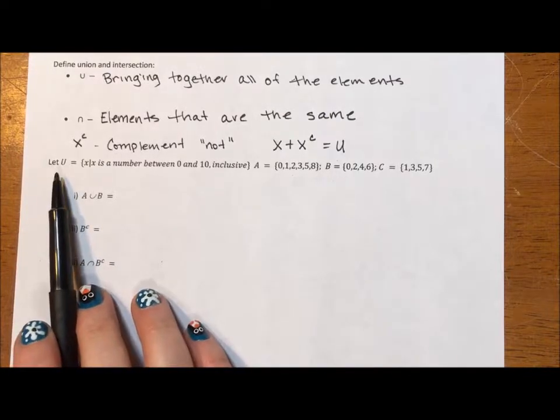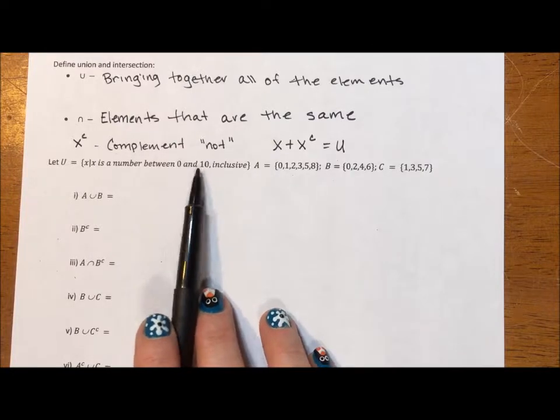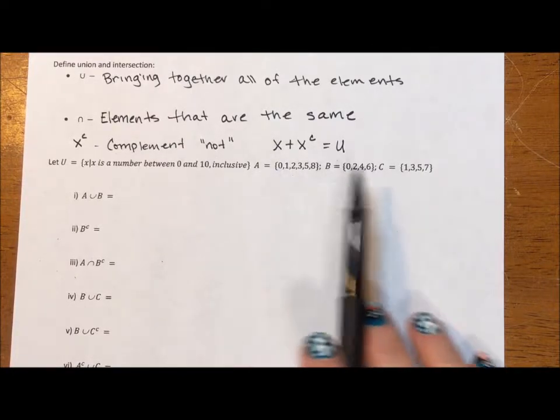Here I have a universe defined. U: X is a number between 0 and 10 inclusive. That means 0 and 10 are part of it. A, B, and C.